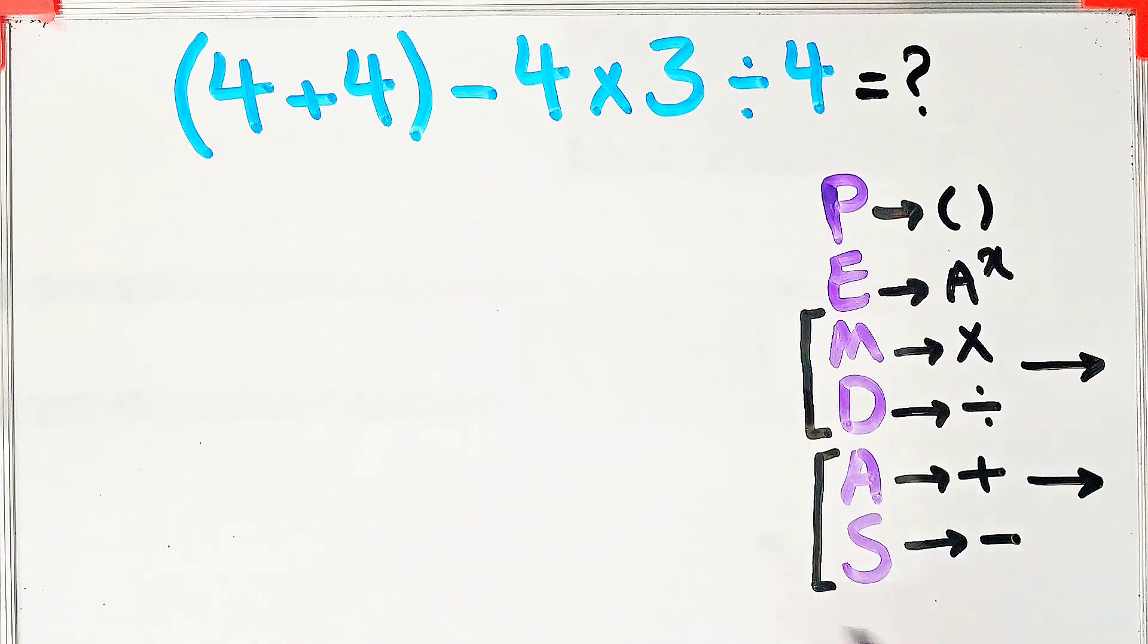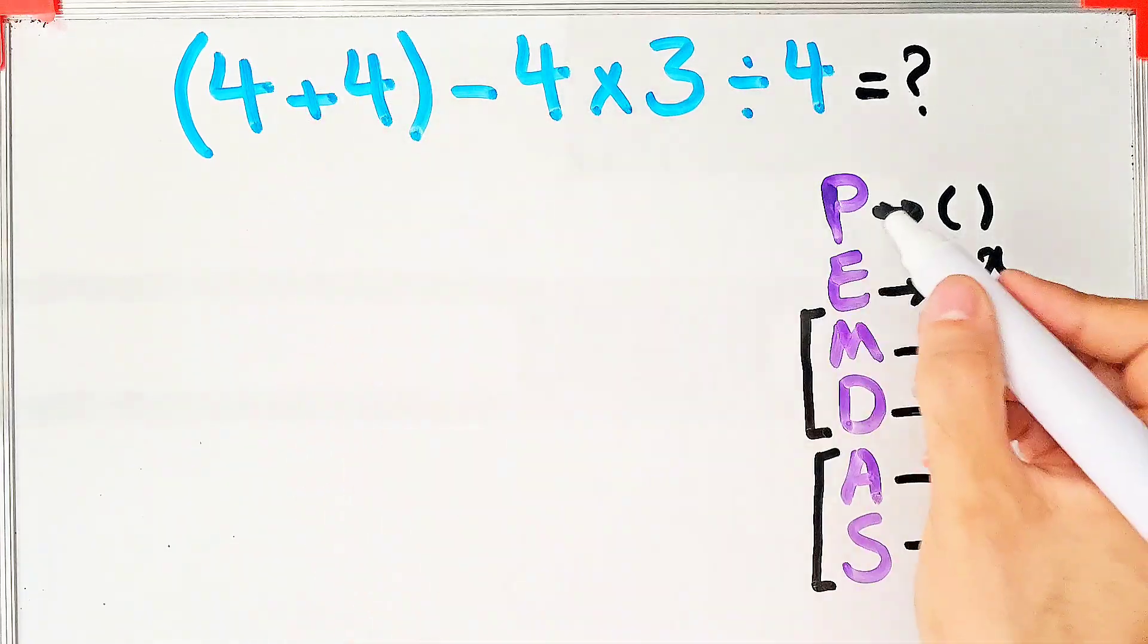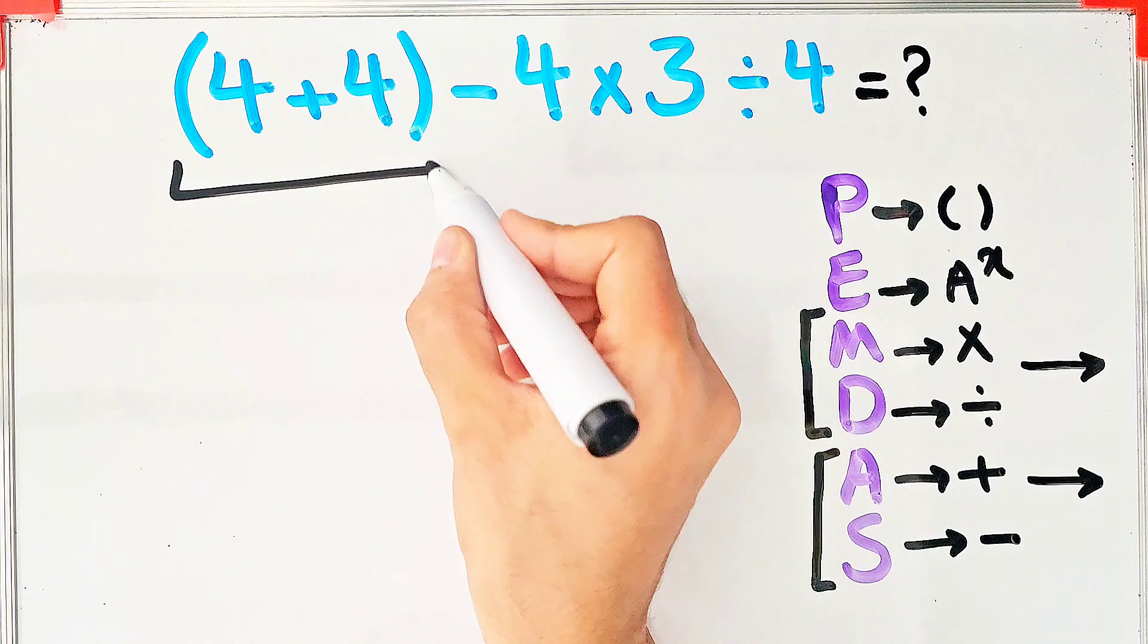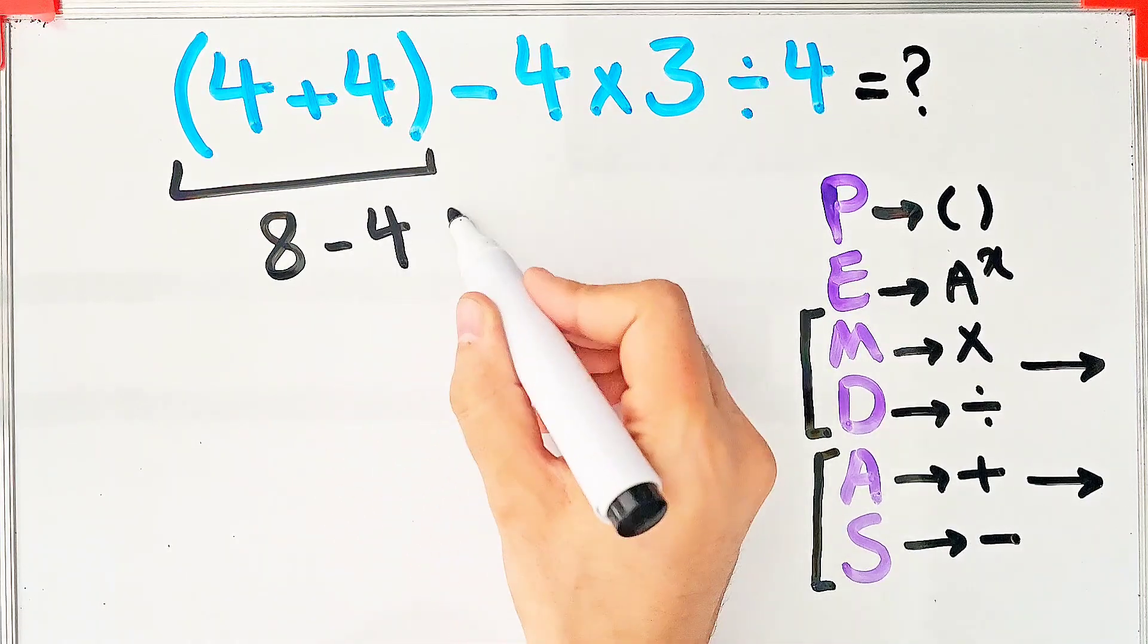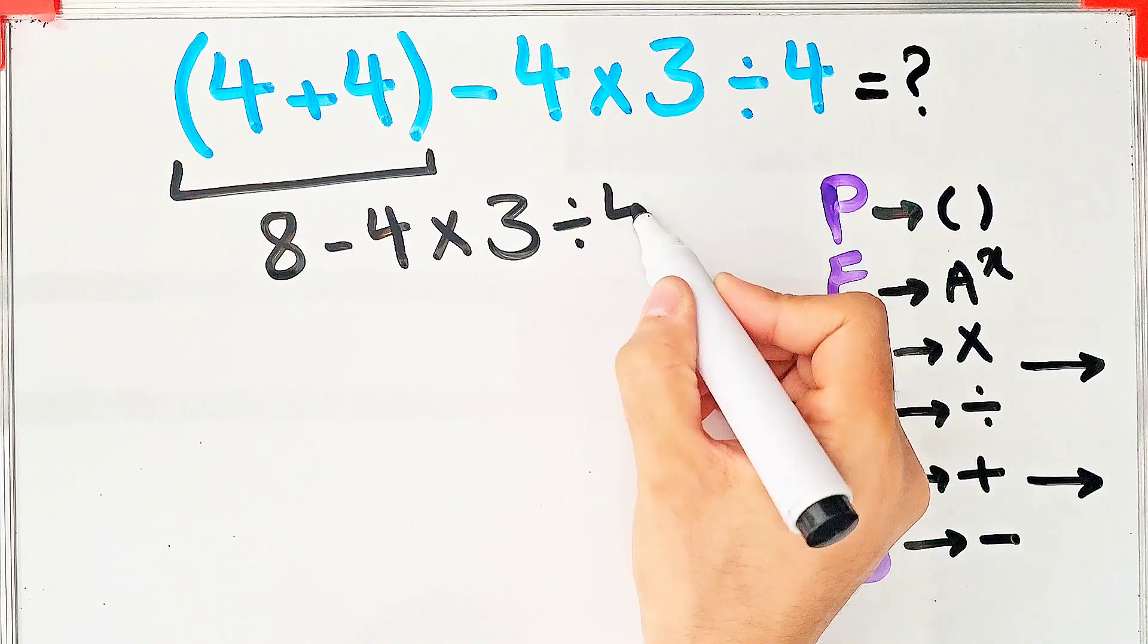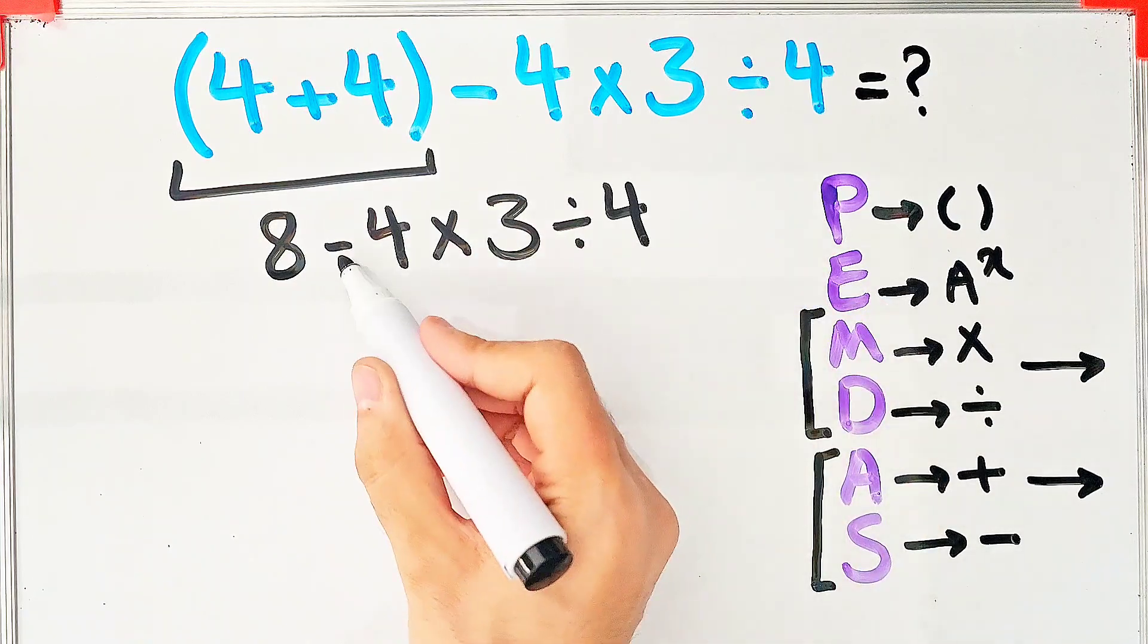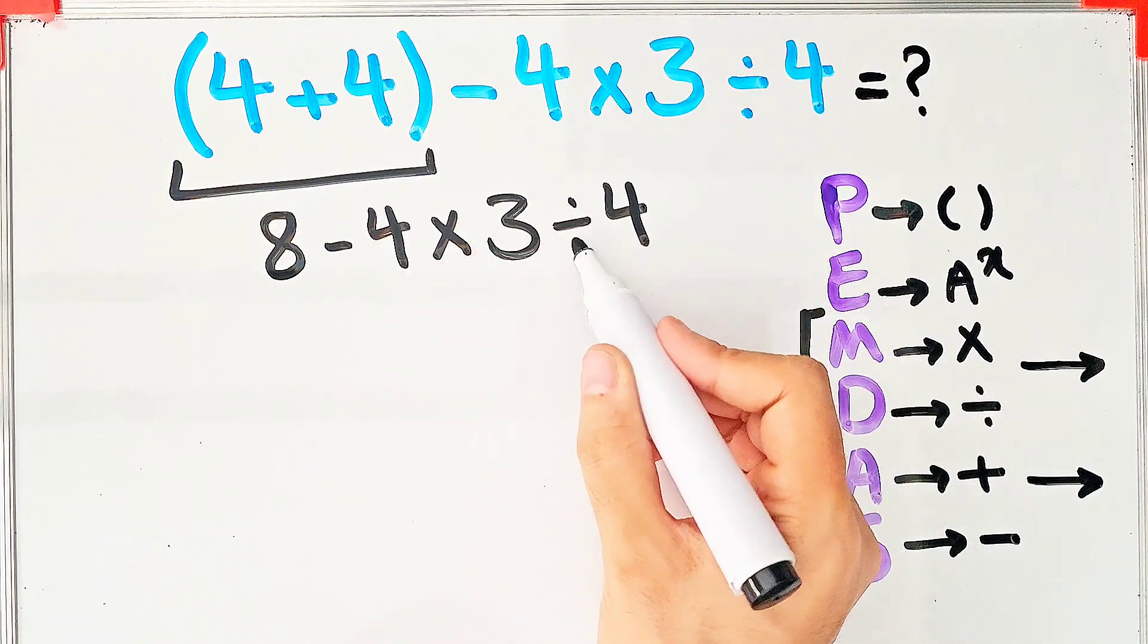First we simplify the parentheses. 4 plus 4 equals 8. Now we have 8 minus 4 times 3 then divided by 4. In this step we have subtraction, multiplication, and division. The multiplication and division have the same level of priority and we start from the left and simplify the question.